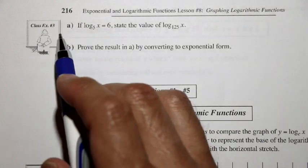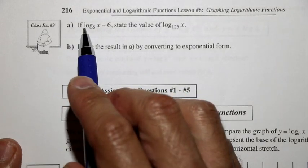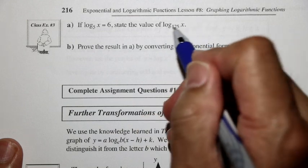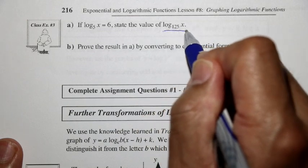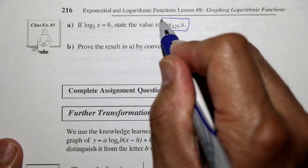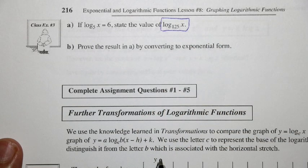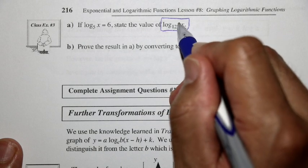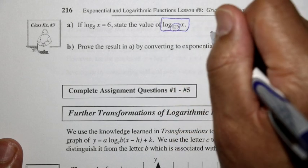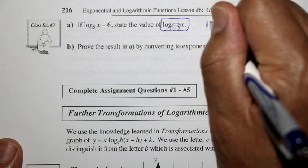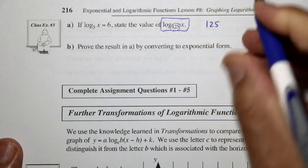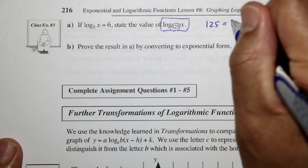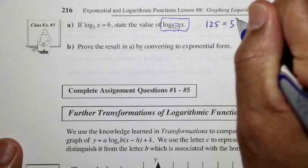Let's take a look at class example 3. If log base 5 of x equals 6, then we're going to try and find the value of log base 125 of x. Here we're going to compare bases and write 125 as a power of 5, which is equal to 5 cubed.